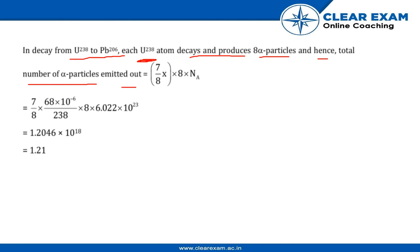...emitted are (7/8)x × 8 × Nₐ. On substituting and calculating, Z comes out to be 1.21.